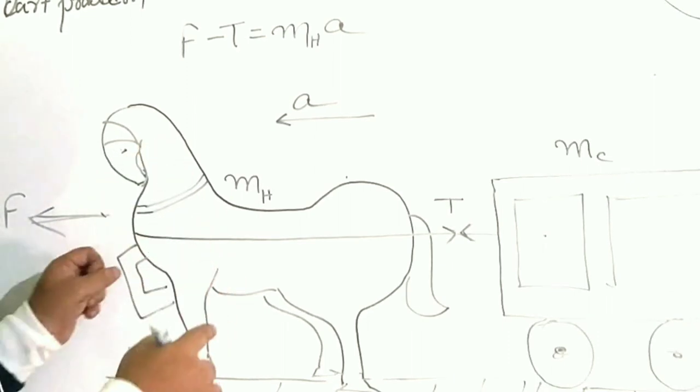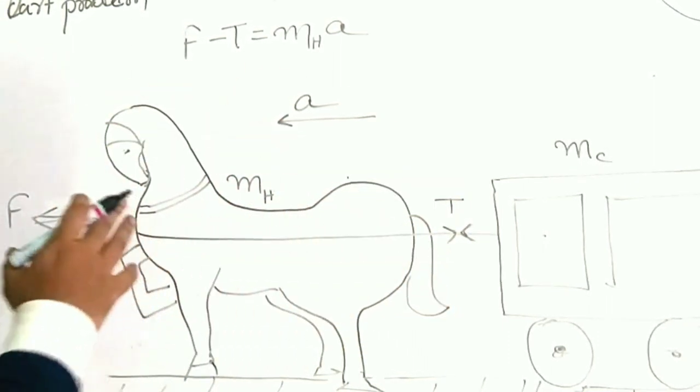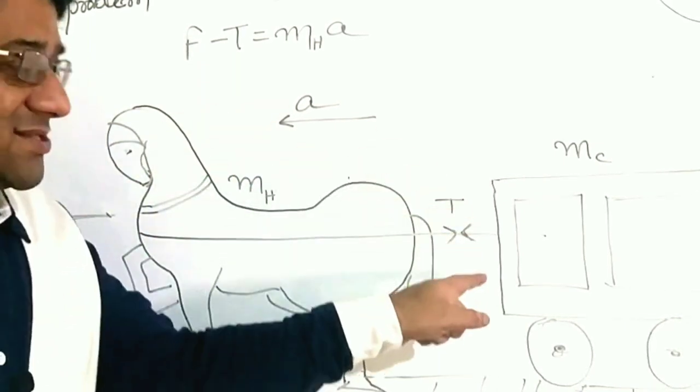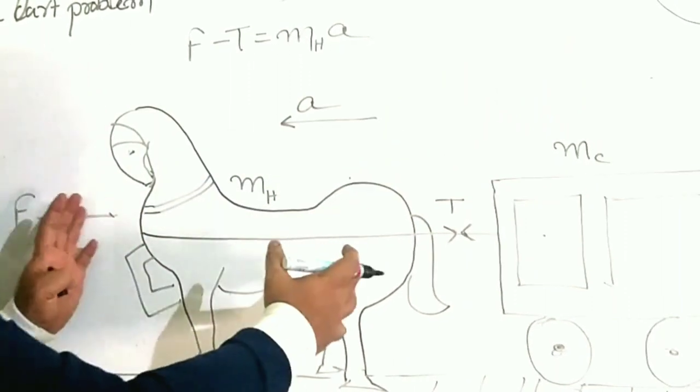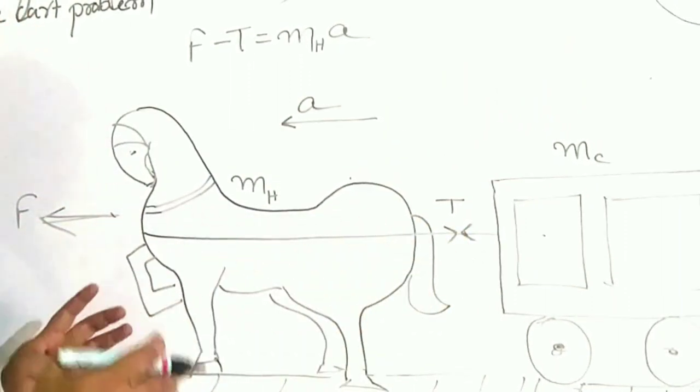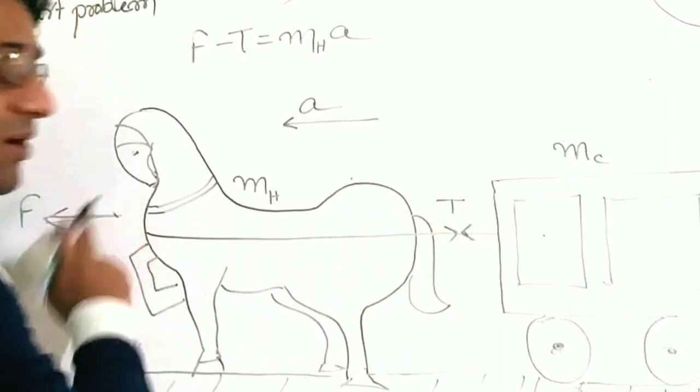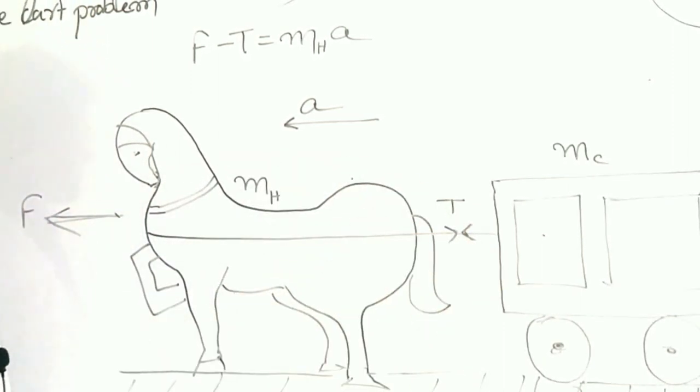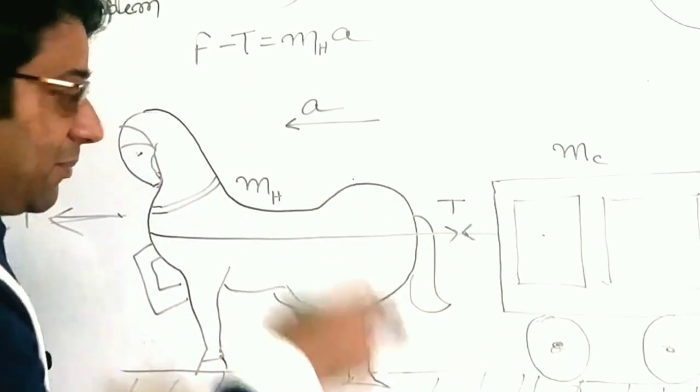So, as long as the force applied by the horse is greater than the tension, then only the motion is possible. If F is equal to tension, it may happen that if it is so heavy that the horse is trying its best but it is not able to move, that also is possible. And that will be possible when F becomes equal to T, or F is less than T. And yes, if F is less than T, it will not move. But only when F is greater than T, it can move with certain acceleration.